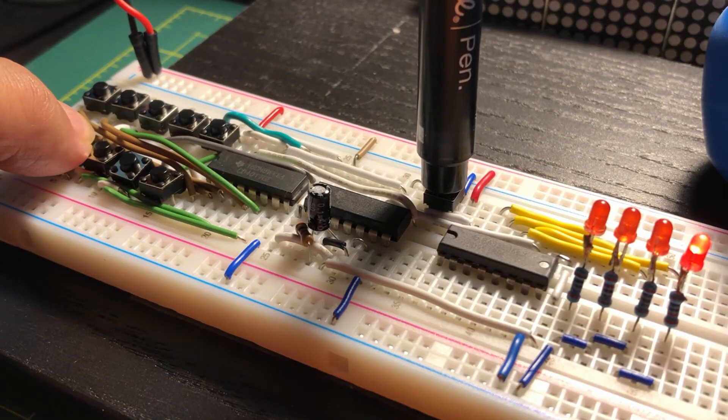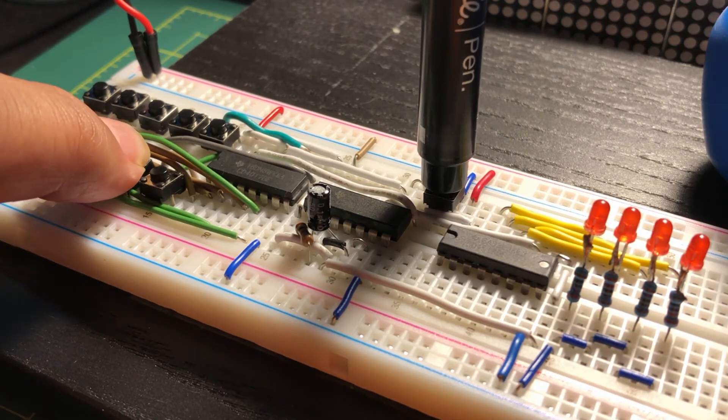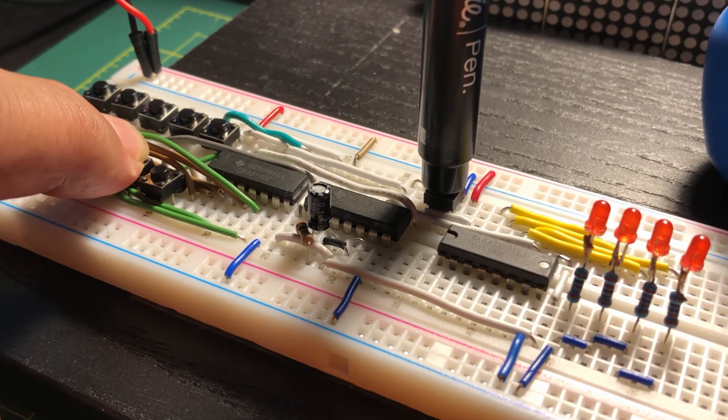And now a quick demo of the circuit by pressing the switches from 0 to 9 and observing the Binary Coded value at the output LEDs.